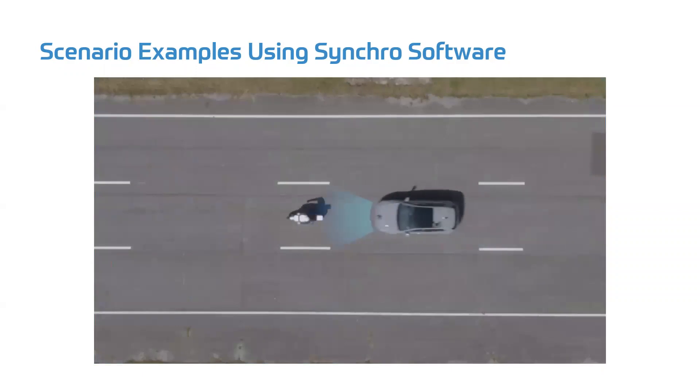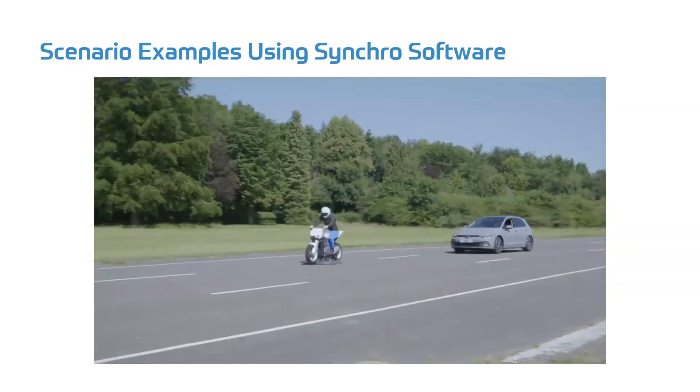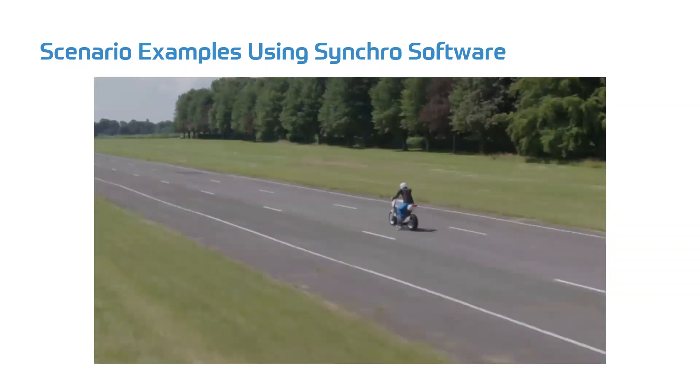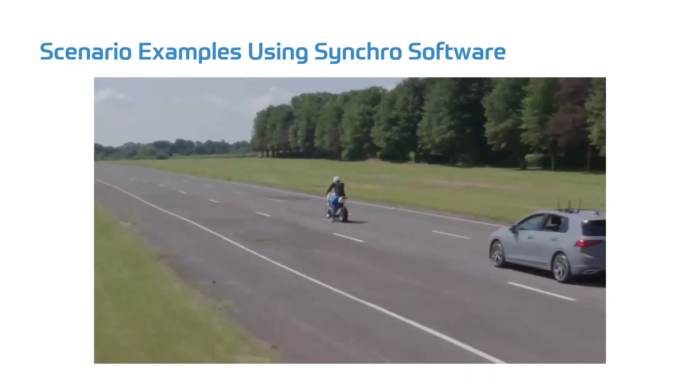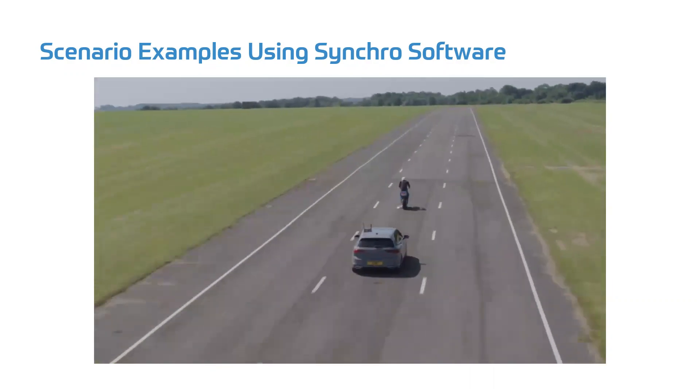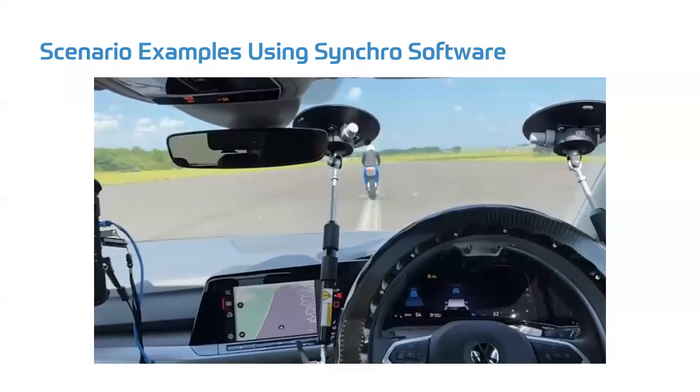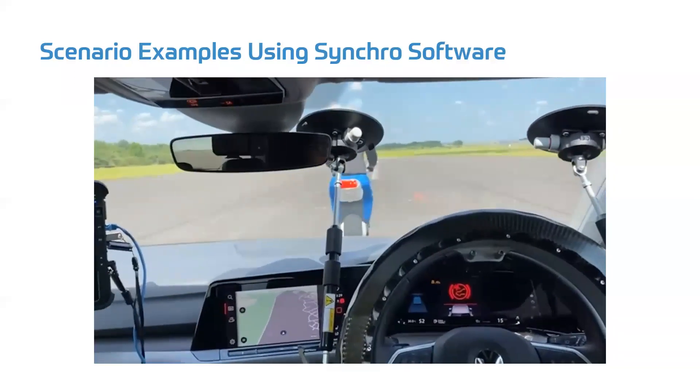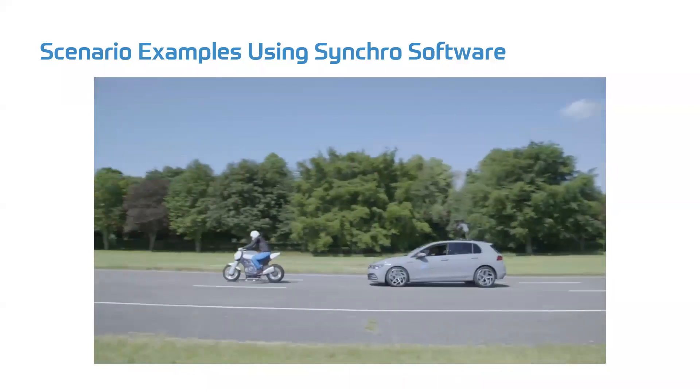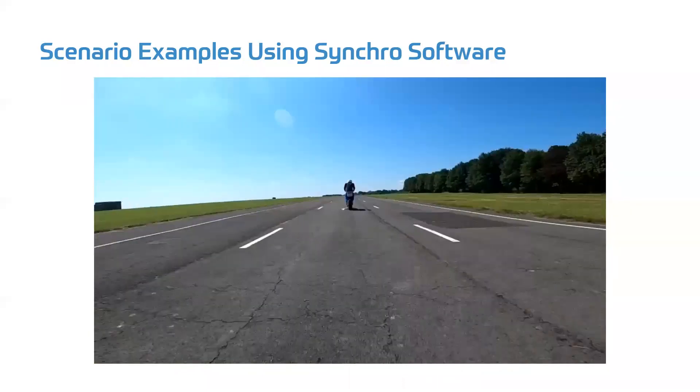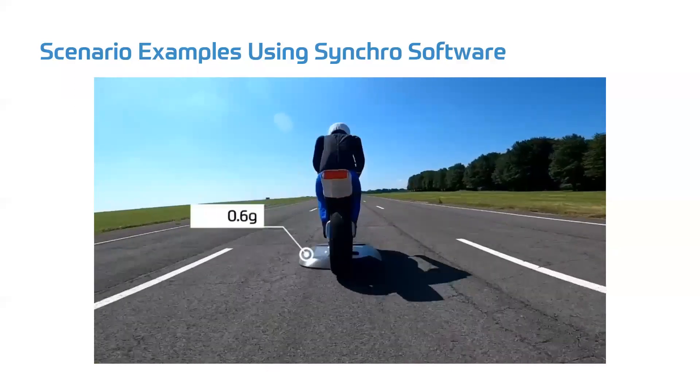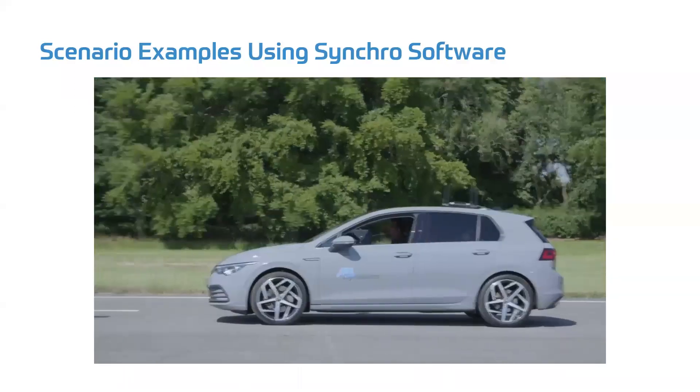Looking at an AEB scenario, in this case, we have the motorcycle traveling with a 12 meter headway at 50 km per hour with the test vehicle also at 50 km per hour. At an unknown point, the motorcycle brakes at 0.6 G and the Golf successfully avoids the collision by picking up the launch pad and applying the brakes.